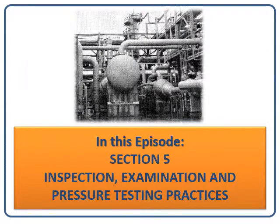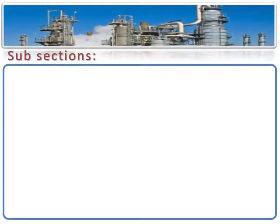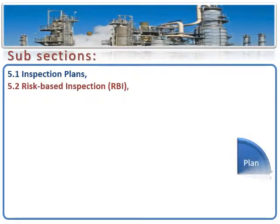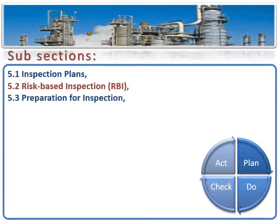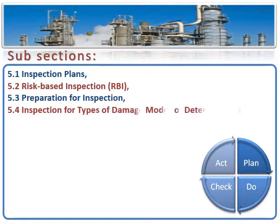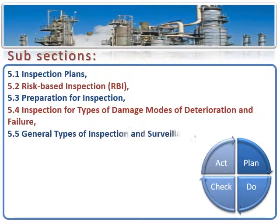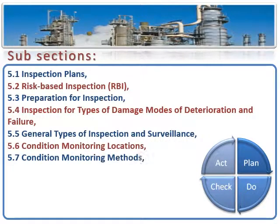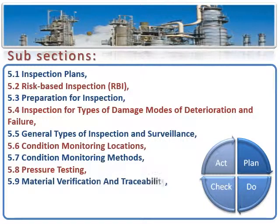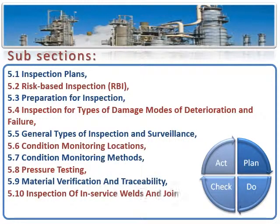In this episode, we will discuss Section 5 for inspection, examination, and pressure testing practices. The easiest way to be versed in all subsections is to consider the following consecutive steps in accordance with the common rule: Plan, Do, Check, Act. From the RBI assessment, we will get an inspection plan and prepare for inspection. Then we will carry out the recommended type of inspection for specific damage mechanisms on specific locations — welds or flange joints — and pressure testing. The check and act activities will be discussed later in the next sections.